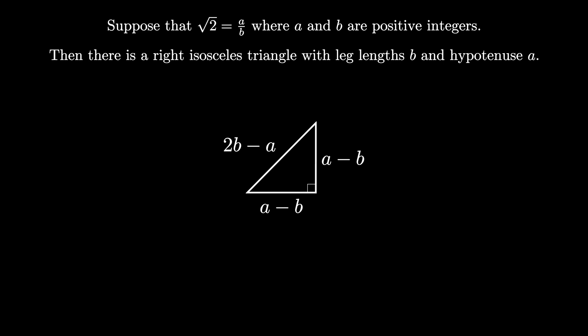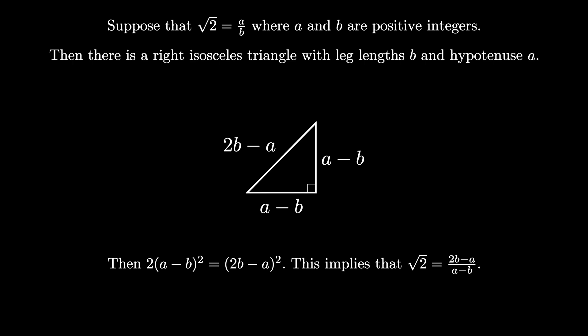By the construction, a minus b is less than b, and 2b minus a is less than a, and both numbers are integers. Moreover, the isosceles triangle implies that 2 times the quantity (a minus b) squared is equal to the quantity (2b minus a) squared, and this implies that the square root of 2 is equal to (2b minus a) divided by (a minus b).